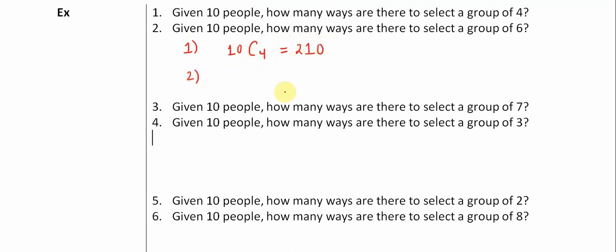In number two, how many ways to select groups of six? Well, this is 10 choose 6, which also happens to be 210. And number three, the exact same prompt, but we want to select seven people. So given ten people, we want to select a group of seven.